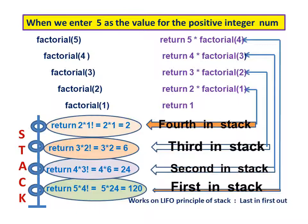Return 2 multiplied by factorial(1) gives 2. Return 3 multiplied by factorial(2) gives 6. Return 4 multiplied by factorial(3) gives 24. Return 5 multiplied by factorial(4) gives 120. That's the answer.